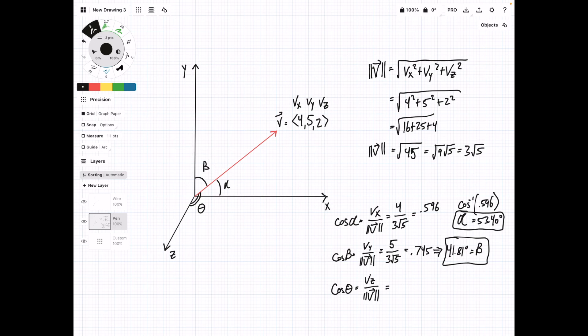Okay, let's do the final one here. Cosine of theta, we're going to have 2 over 3 square root of 5. This is equal to 0.298. And taking the inverse cosine of this number gives us 72.65 degrees. And that is equal to theta.